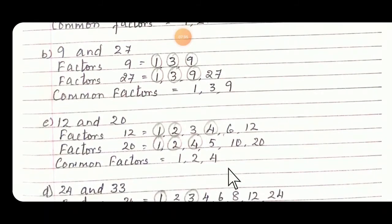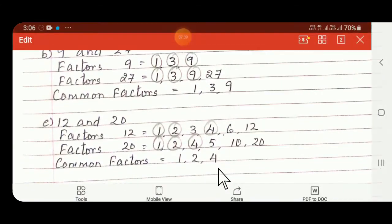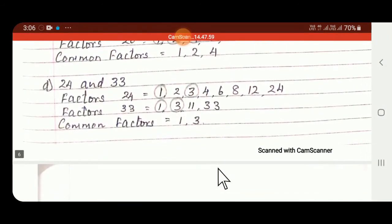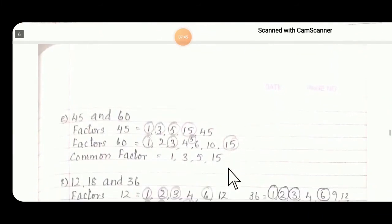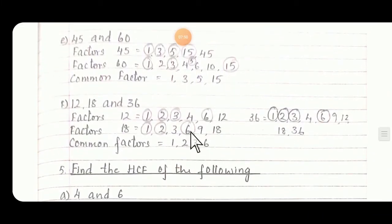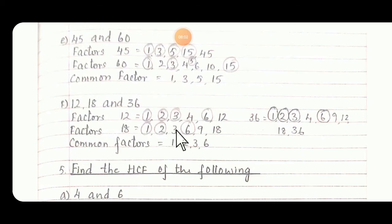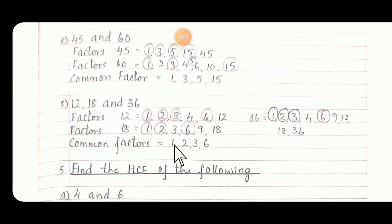Similarly do for C, then D, E, and let us take F. In F we have 12, 18, and 36. Factors of 12: 1, 2, 3, 4, 6, and 12. Factors of 18: 1, 2, 3, 6, 9, and 18. Factors of 36 are 1, 2, 3, 4, 6, 9, 12, 18, and 36. We have to compare these three — 12, 18, and 36. In that we got common factors 1, 2, 3, and 6.